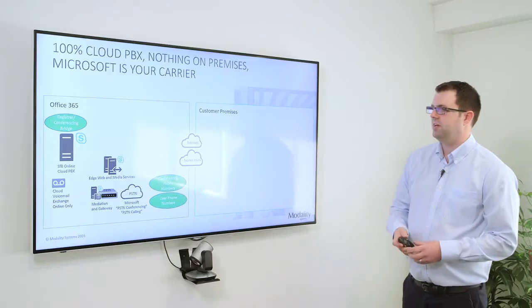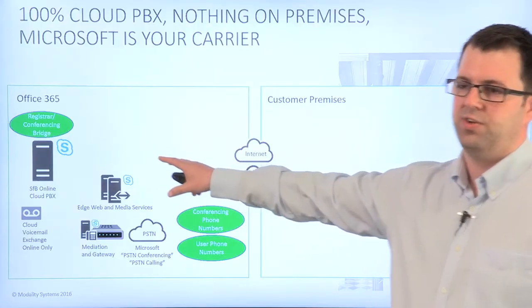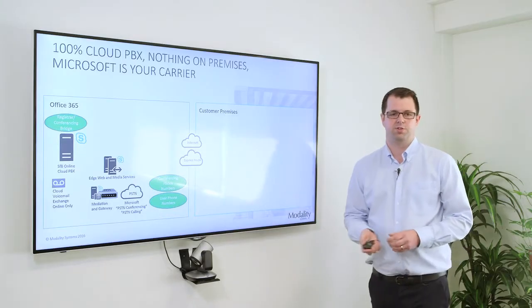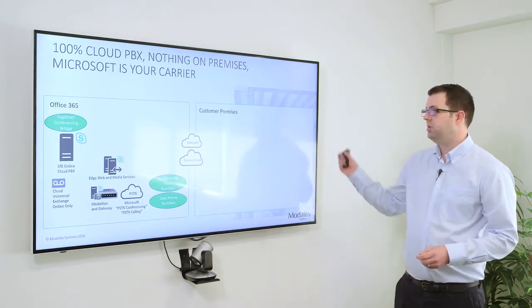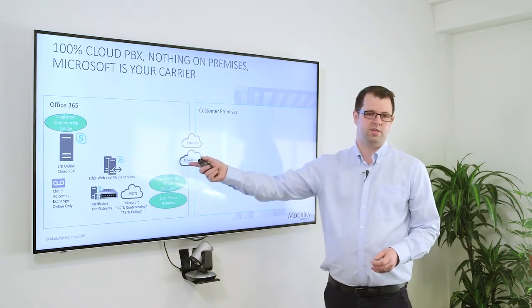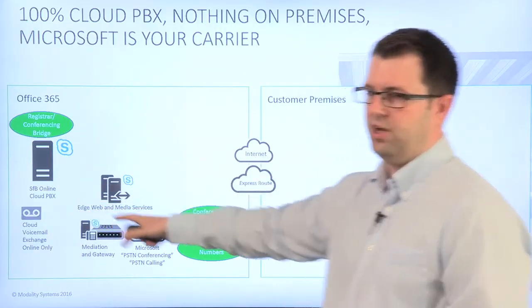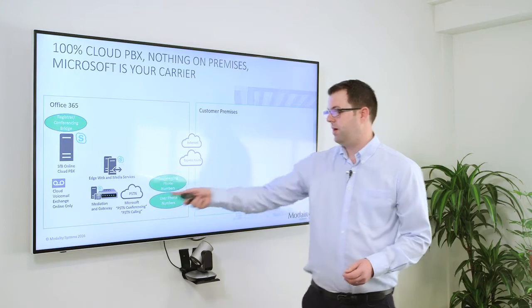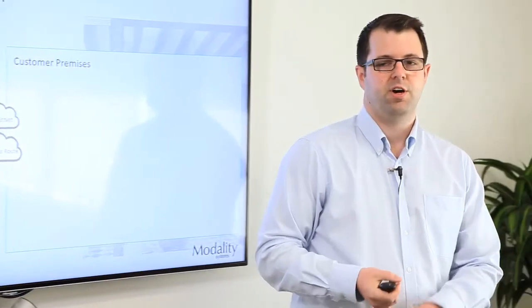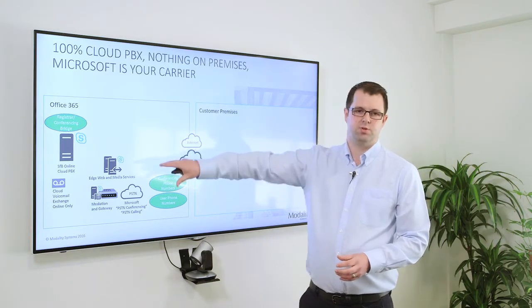What's changed and what's exciting is that now you can have that ability but in Office 365 — you can buy it from Microsoft as a service. In this model, we have nothing on customer premise at all. We have an internet connection, or a dedicated connection to Microsoft called ExpressRoute. We have all of our services in Office 365 — Microsoft runs them for us — and we have Microsoft as our carrier, providing our phone numbers, equivalent to our PSTN carrier in the traditional server world.